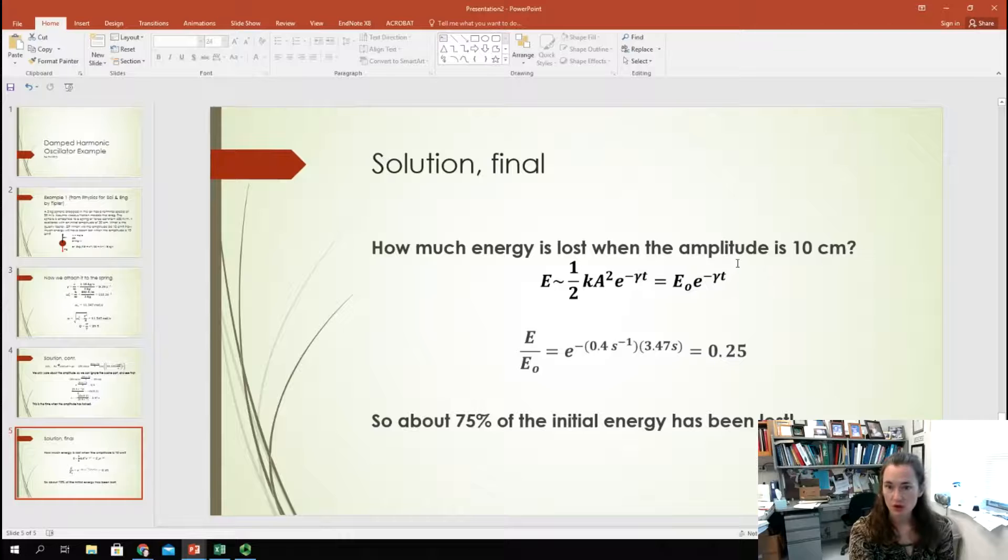Okay. So, good. What I can do here is, how much energy is lost? Well, let's figure out what fraction of energy is left at this time. So, that would be E over E_0 is equal to this e^(-gamma*t). Plugging in for gamma and t, I've got e^(-0.4*3.47). When I do that, I get about 0.25 or a quarter. So, only about a quarter of the energy is left at this time. Okay? So, that means that 75% of the initial energy has been lost.